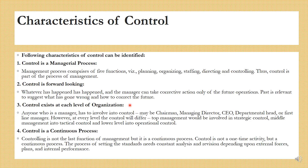Control exists at each level of organization. It's not that at planning, directing or organizing, control cannot happen — at every stage, you can have some level of control. Anyone who is a manager has to involve in control: it can be the chairman, the managing director, CEO, departmental head, first line manager, superintendent. All these people can exercise control and can be controlled as well.